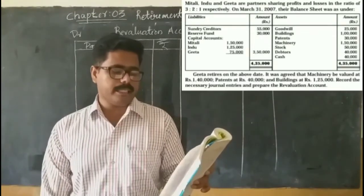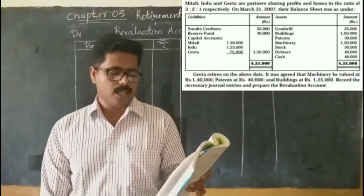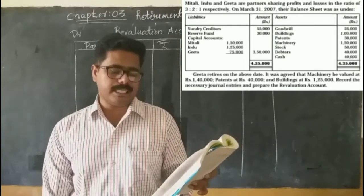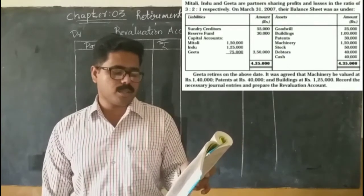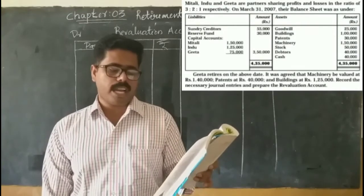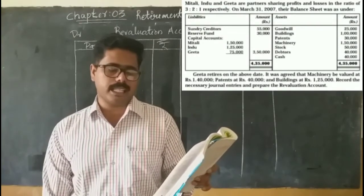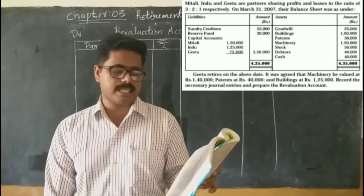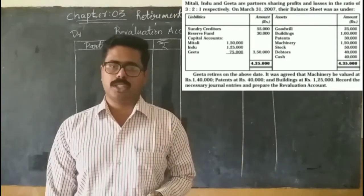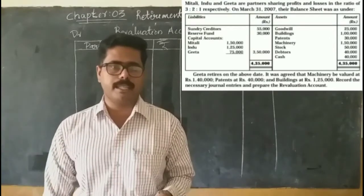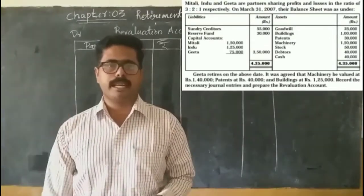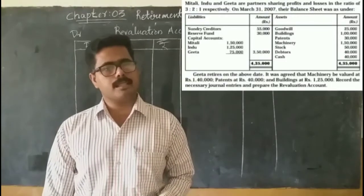On Gita's retirement, it was agreed that machinery be valued at rupees 1,50,000, patent at rupees 40,000, and building at rupees 1,25,000. We need to record the necessary journal entries and prepare the revaluation account. Journal entries can be prepared similarly to the admission chapter, so try those yourself.